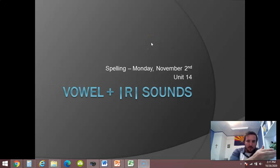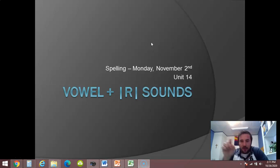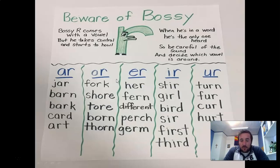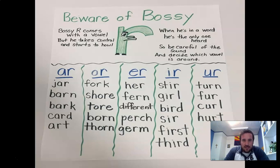We learned about some of the spellings last week. You can learn about four more, focusing on the vowel that comes right before the R. They sometimes call this the bossy R because it kind of bosses the vowel around. It's really hard because the R kind of bosses itself around and dominates the sound, which is why it's really hard when you hear the ER sound to understand if it's ER, IR, UR, OR, or AR.